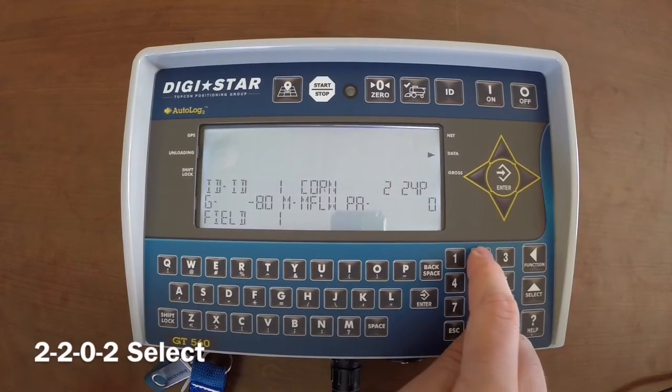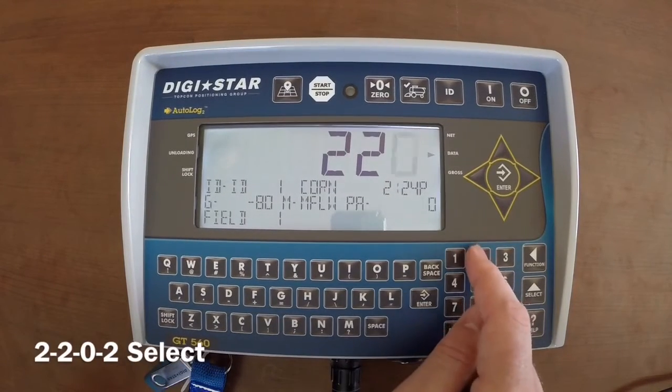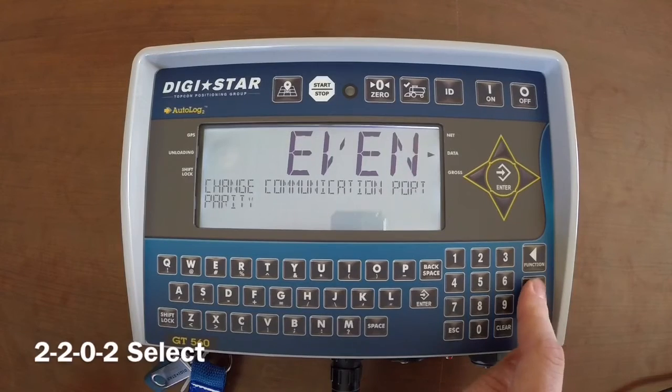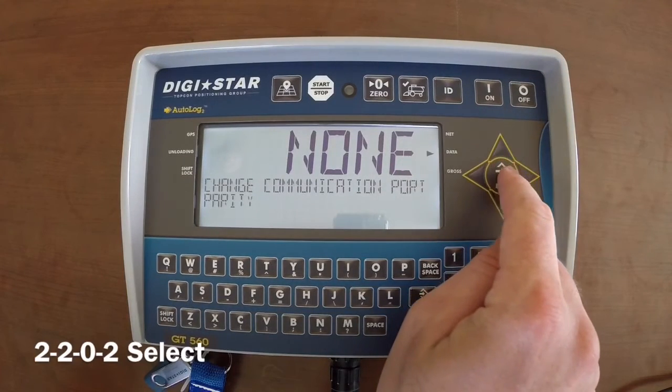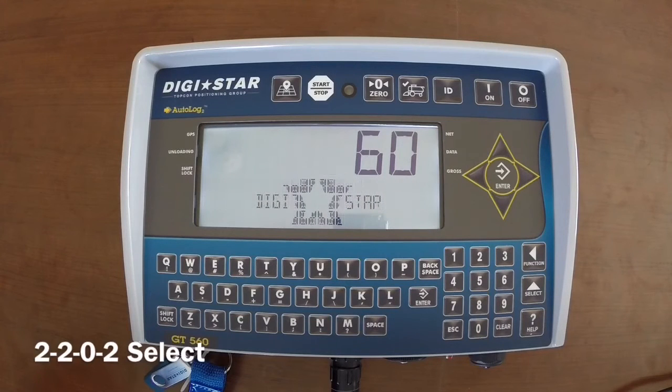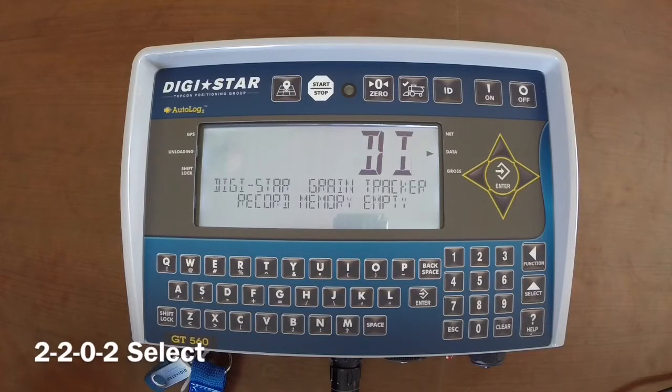Type in 2202 and then the select button. Change this to none by pressing the select button, then press the enter button. The indicator will then reset, power cycling itself off and then back on.